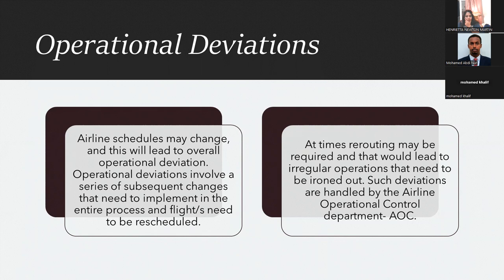At times, rerouting may be required, and that would lead to irregular operations that need to be ironed out. If there is operational deviation, there might be a possibility that certain flights are rerouted — instead of going via a particular route, they might take some other route in case of weather problems. You might have observed that a flight is not coming via the expected route but taking some other route. When there are impediments to smooth operations, there can even be flight rerouting, leading to irregular operations. Such deviations are handled by the Airline Operation Control Center — AOCC — the same department. That means they don't just take care of flight takeoff or monitor flights in the air, but they also take care of flight deviations.